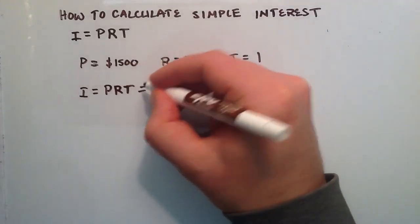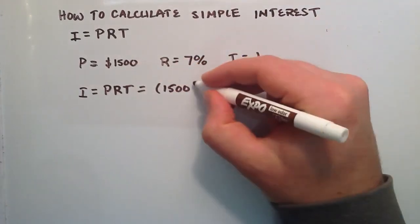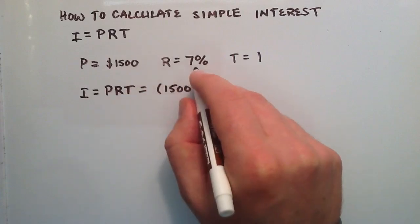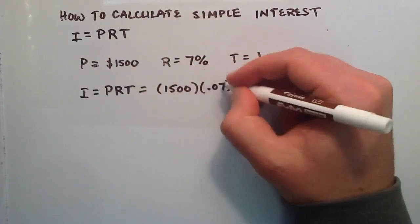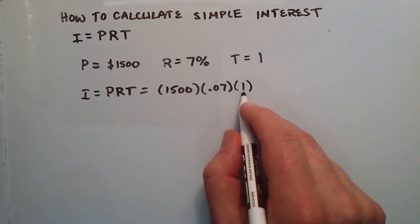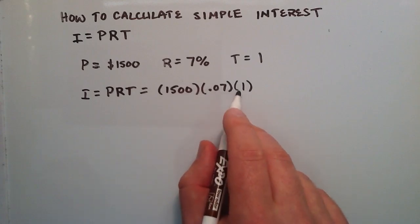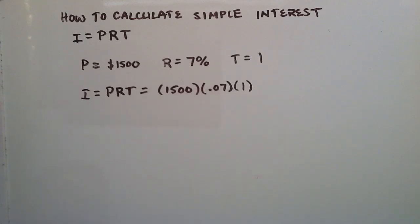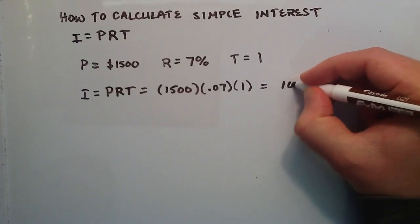P is going to be the $1,500. R is going to be our rate, which is going to be 0.07 when we convert that to a decimal, multiplied by the time invested, which is just one year. So basically, we just multiply these three things together. It's really simple. You can plug that in on your calculator, and you will find that this is equal to 105.